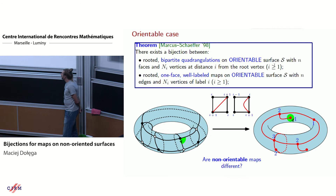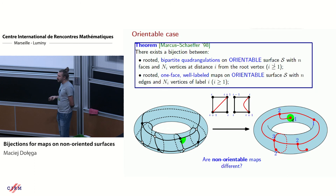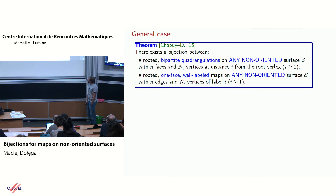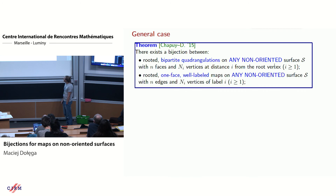What about non-orientable surfaces? This construction clearly depends on having a global orientation, so it's not obvious whether we can extend it. But it turns out this is possible — the theorem holds for any surface, including non-oriented surfaces. Moreover, if you restrict to orientable surfaces, you obtain the same construction that was just described.